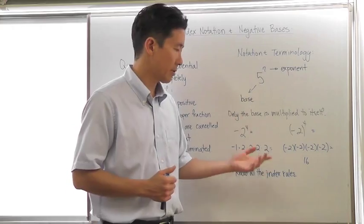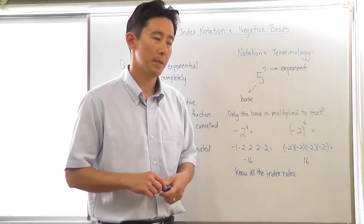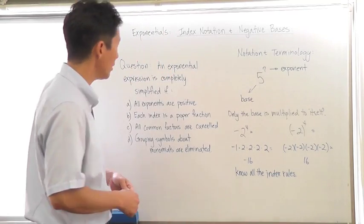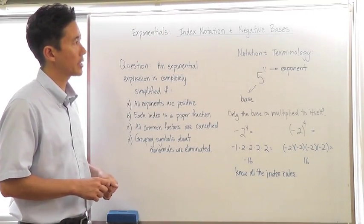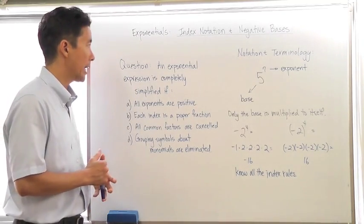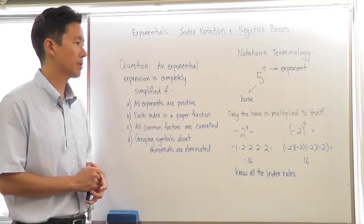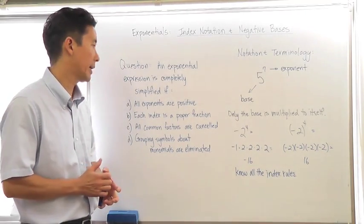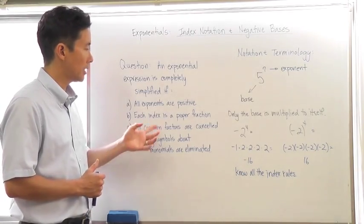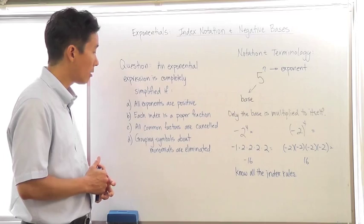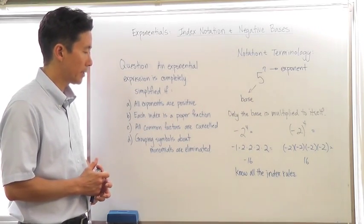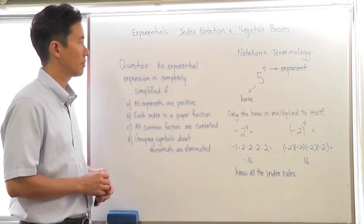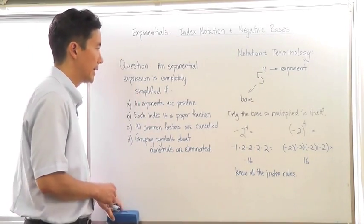There are all these index rules that most of us have already gone through, and I'm expecting you all to know. You can refer back to the textbook to find out what those look like. One big question regarding exponentials when we start off with expressions is: how do you know if an exponential expression is completely simplified? Well, if these four conditions are met, then you know it is simplified: all exponents are positive; each index is a proper fraction; all common factors are cancelled; and grouping symbols above monomials are eliminated. If those four conditions are taken care of, the exponential expression is completely simplified.